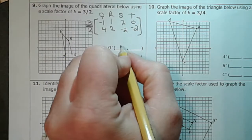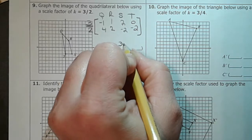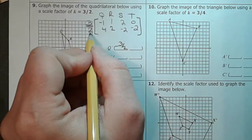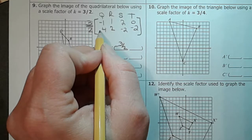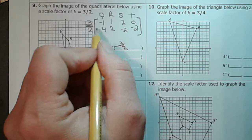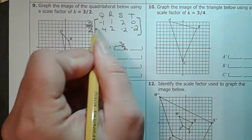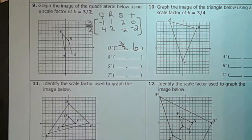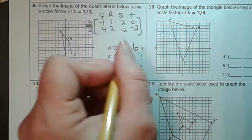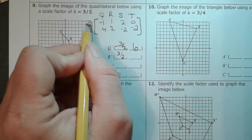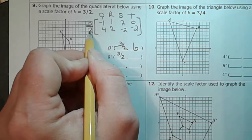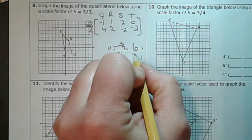So three halves times negative one, well that's negative three halves. Three halves times four gives us three times four is twelve divided by two gives us six. Three halves times one is three halves. Three halves times two gives us three times two which is six, or divided by two, which is three.